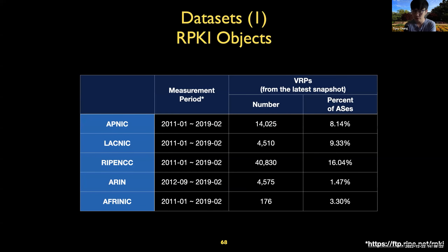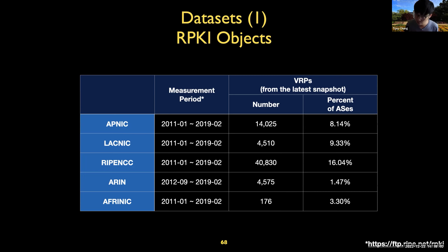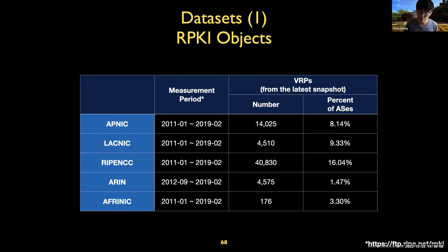There are two questions to consider. The first is: how many network operators and resource owners that manage many IP prefixes have actually generated RPKI objects — ROA and VRP objects — and uploaded them to the central repositories, meaning they try to protect their own resources. The other perspective is: how many routers and network operators actually do validation using RPKI. In this class we're going to focus on both perspectives, but let me first show you how we can analyze the deployment from the first perspective.